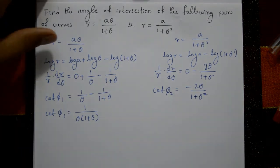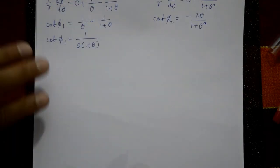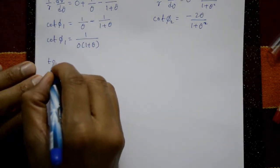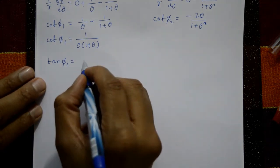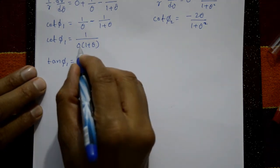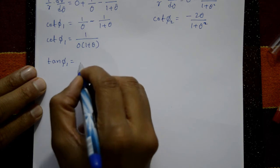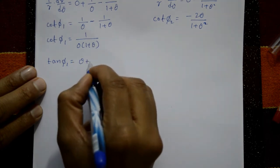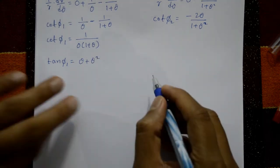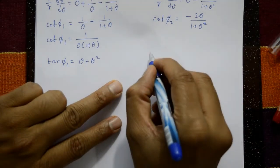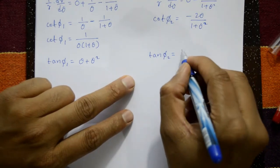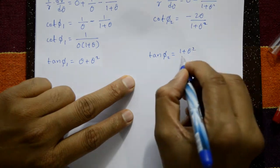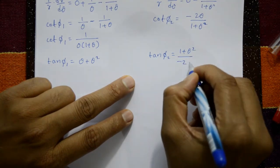Rather than finding φ₁ and φ₂ individually, we use tanφ directly. tanφ₁ = θ(1+θ) = θ + θ². And tanφ₂ = (1+θ²)/(−2θ).